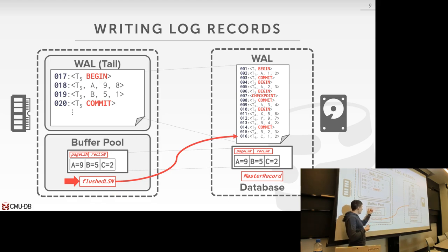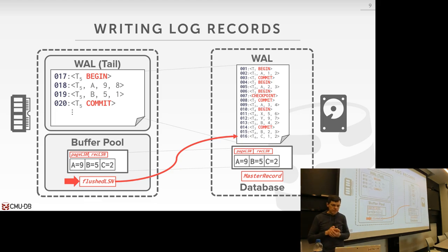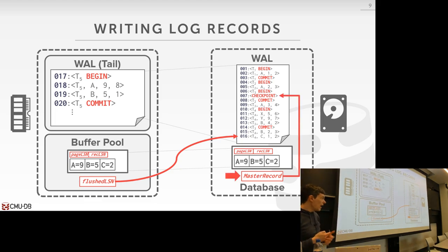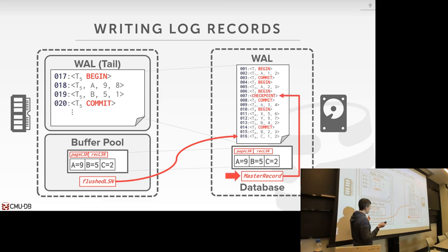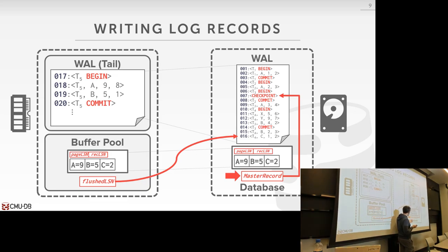During recovery you check in that range. When it comes time at runtime to flush a page, you check the page LSN. The master record is just the location to the last checkpoint, and we use this when we recover to figure out where we want to start our analysis — to look at the log and figure out what was running.